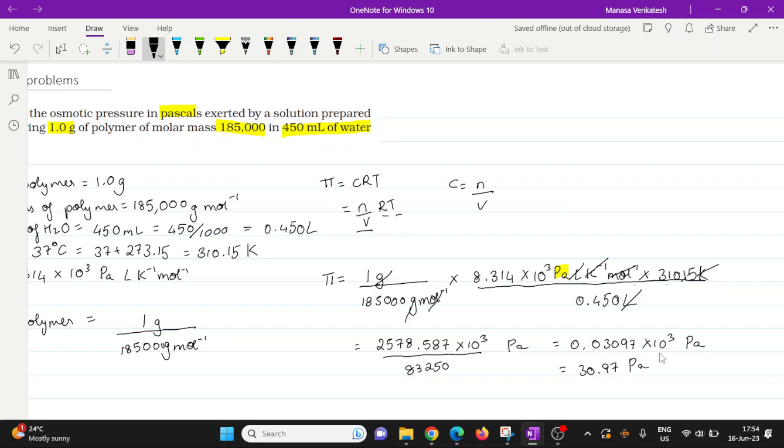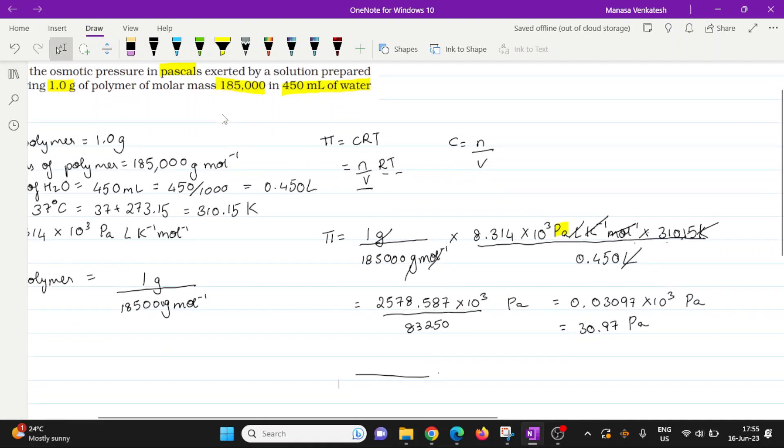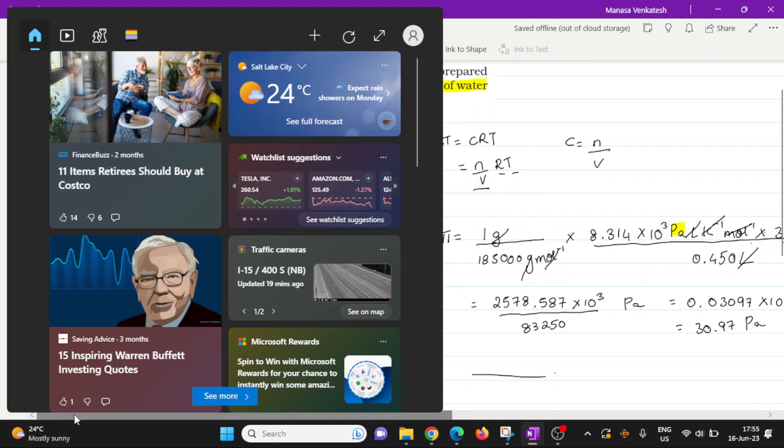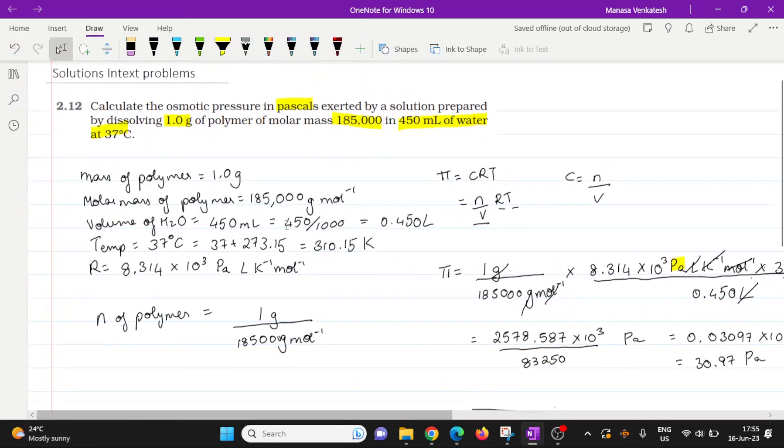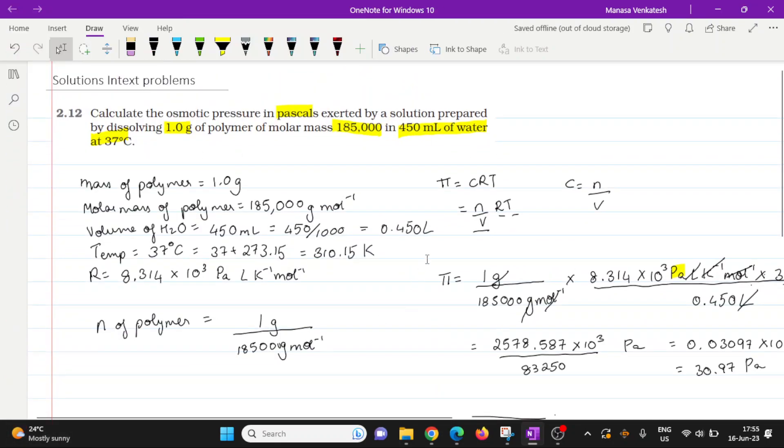So basically for this question, what we used is the equation π equals CRT. Okay. So essentially what we did was we calculated, we were given the mass of the polymer.